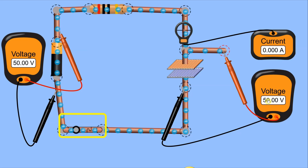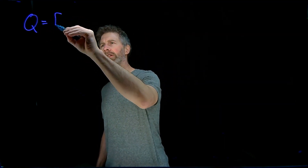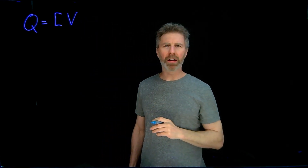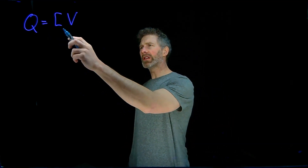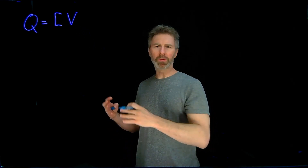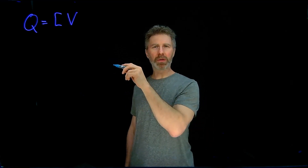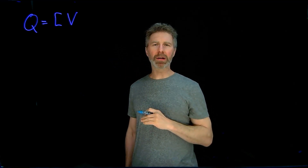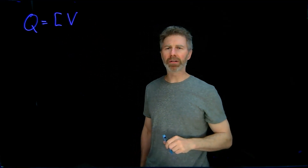Now that you have a qualitative idea of the relationship between voltage and current in capacitors, let's take a closer look at the quantitative relationship. Going back to the definition of capacitance — the relationship between charge on the capacitor and voltage across it — a charge Q is equal to the capacitance times the voltage. We can rearrange this equation and look at it from different points of view, but this is how I want to look at it today. This applies at any particular instant in time: when you have voltage across a capacitor, you're going to have a certain amount of charge on it, determined by that equation.